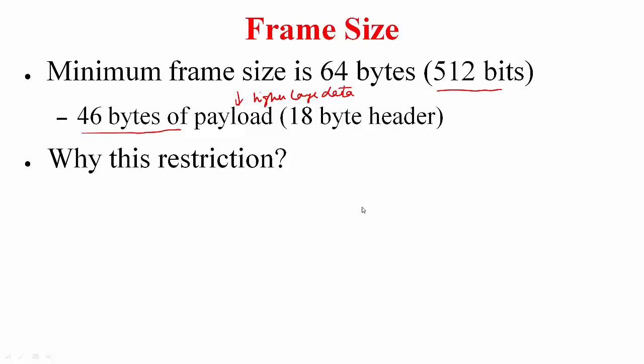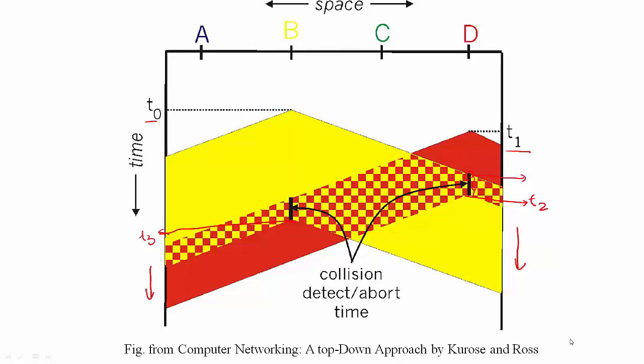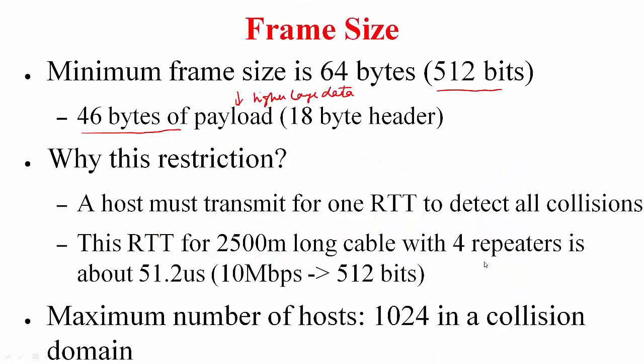Now why do we have such a restriction on frame size? This has to do again with collision detection. Look at this figure and tell me why do we have a minimum frame size restriction in Ethernet. If a host has to detect a collision of the packet that it has sent, it has to transmit for at least one round trip time. This round trip time for 2500 meter long cable with 4 repeaters turns out to be about 51.2 microseconds, and at 10 Mbps this turns out to be 512 bits.